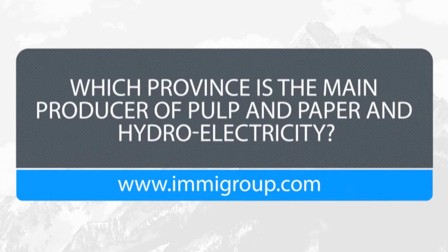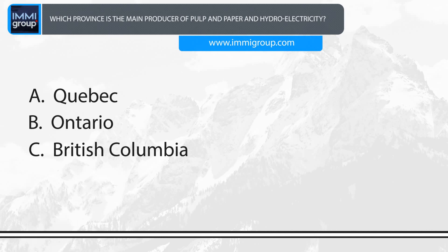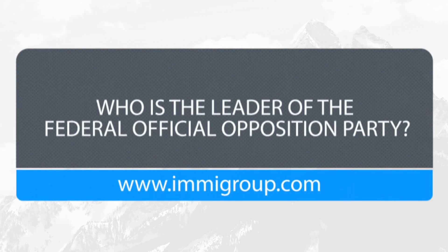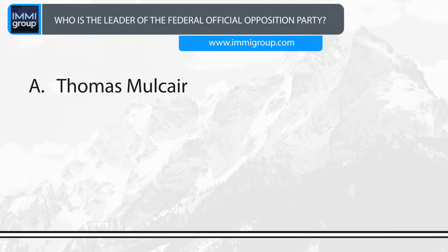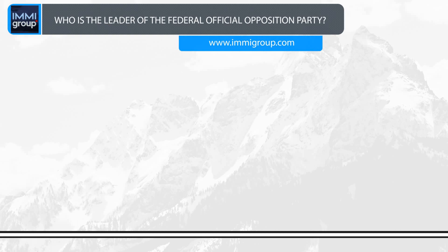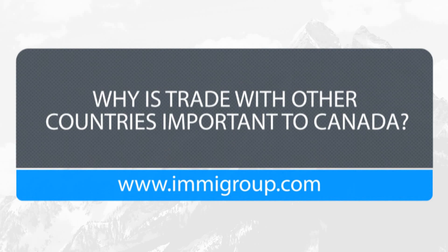Which province is the main producer of pulp and paper and hydroelectricity? A. Quebec. B. Ontario. C. British Columbia. D. Manitoba. Answer: Quebec. Who is the leader of the Federal Official Opposition Party? A. Thomas Mulcair. B. Stephen Dion. C. Bob Ray. D. Adrian Dix. Answer: Thomas Mulcair.